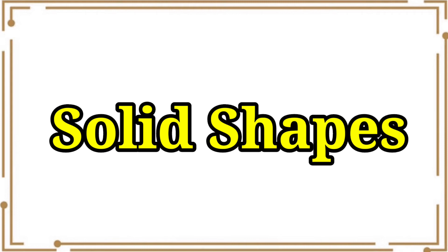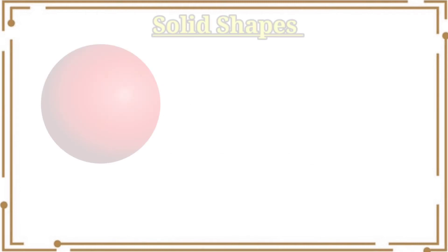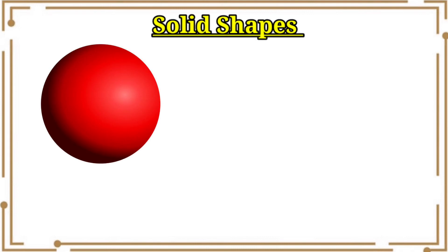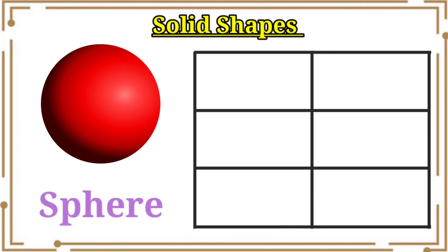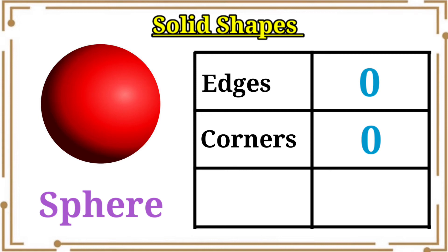Now let's look at some solid shapes and their properties. Look at this solid shape. This name is sphere. Sphere has no edges, no corners, and only one face.